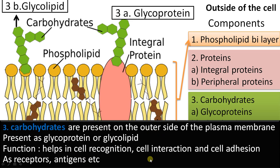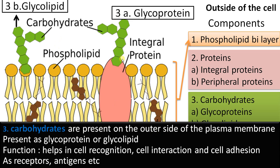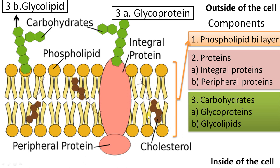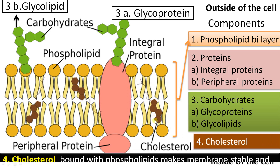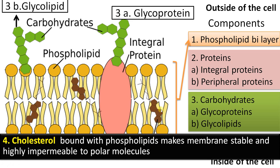Carbohydrates help in cell recognition, cell-to-cell interaction, and cell adhesion. There may also be some receptors and surface antigens — many functions. Finally, there is cholesterol — a very small amount in the plasma membrane — seen attached to the phospholipid bilayer, often at the fatty acid tail region. It makes the membrane stable and highly impermeable to polar molecules, contributing to the selective permeability of the plasma membrane.